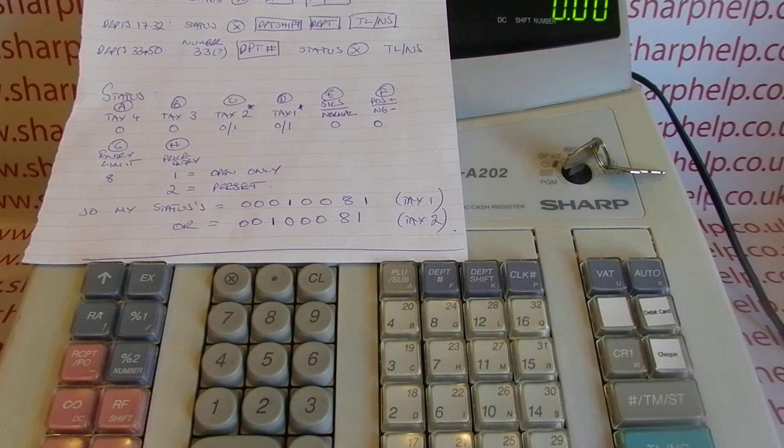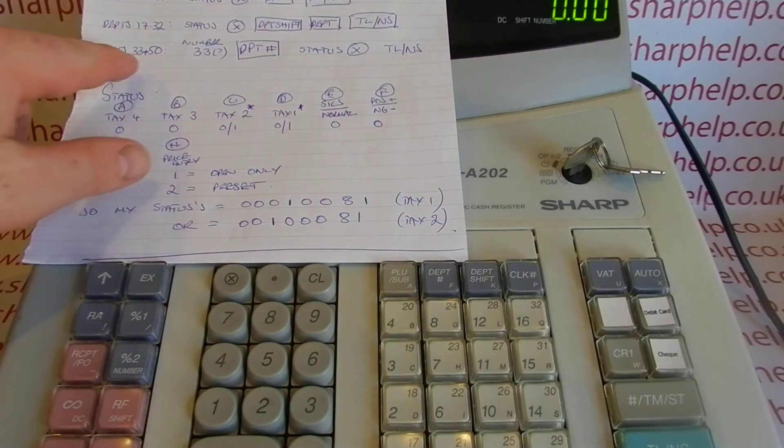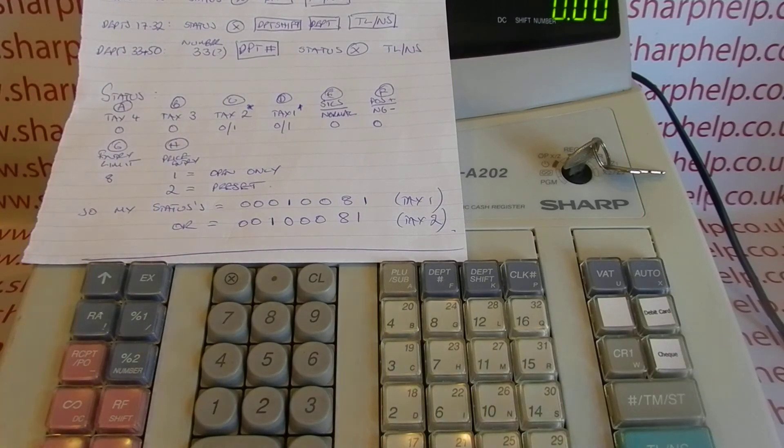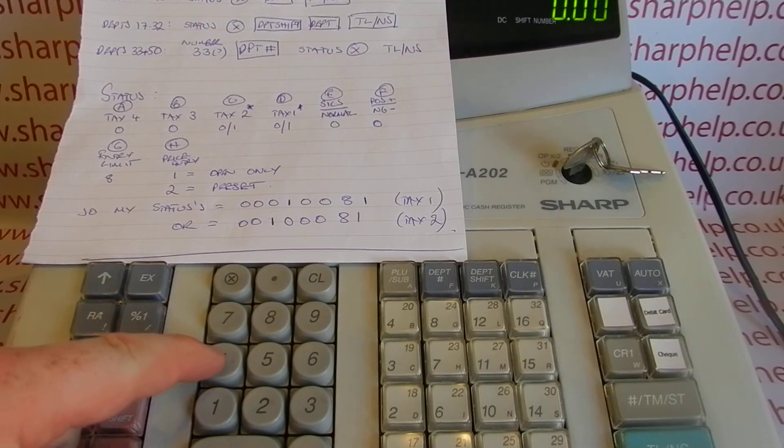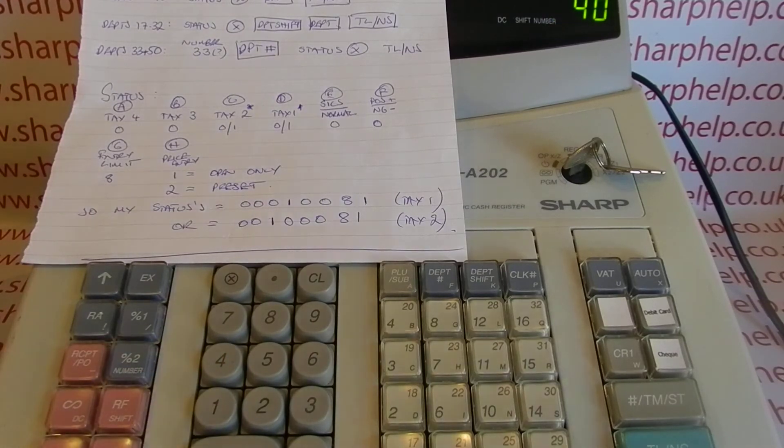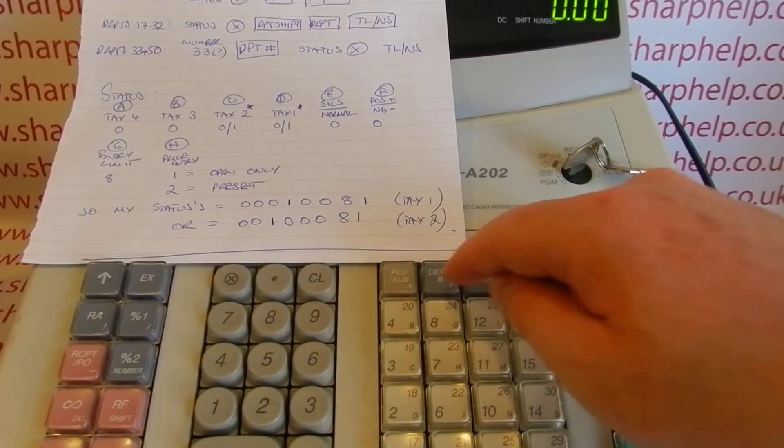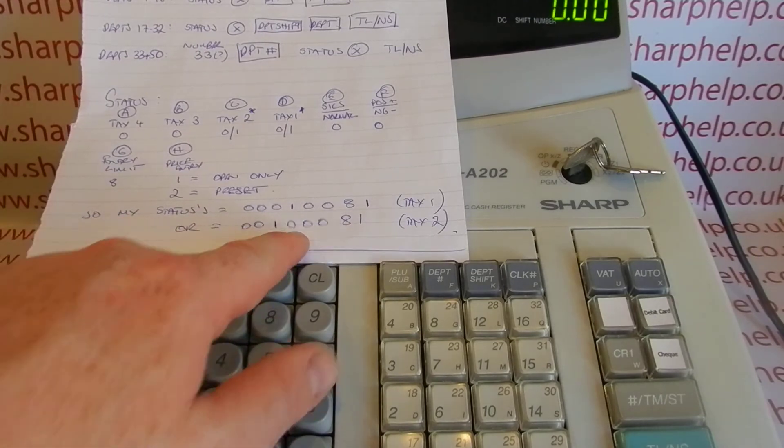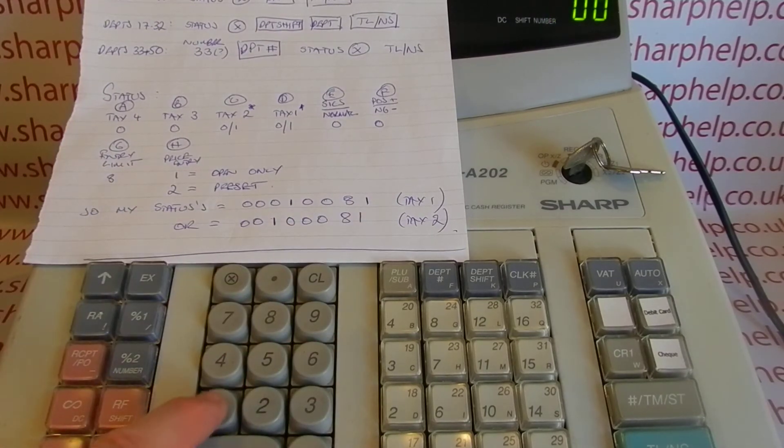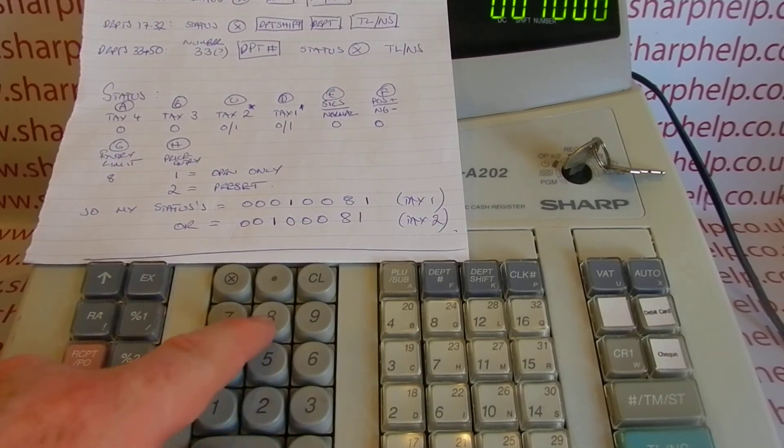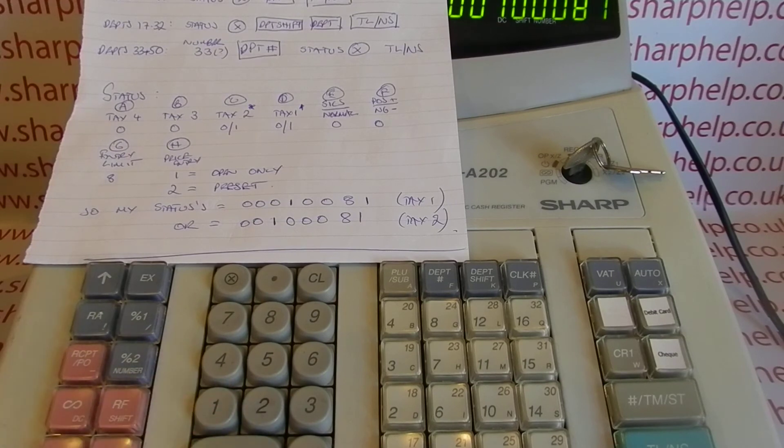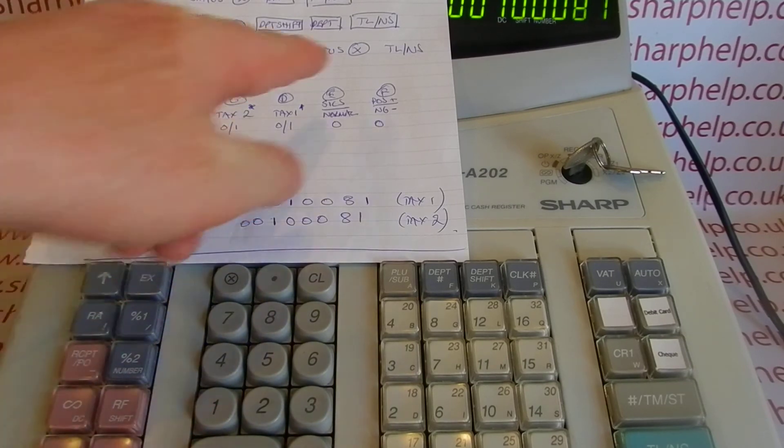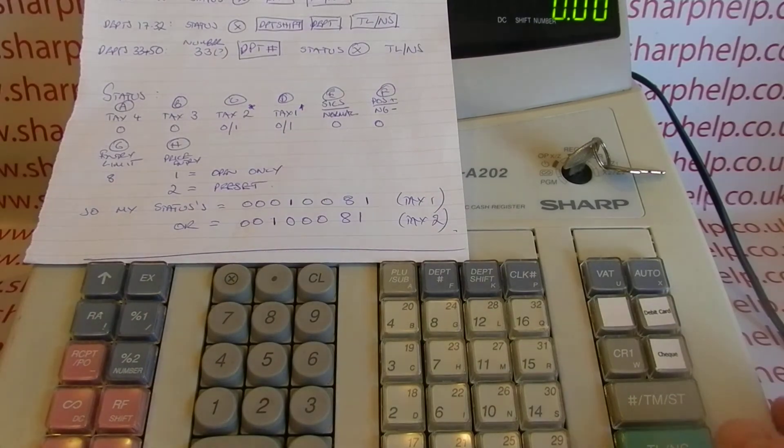I'll just show you the final, the other variant you can do if you're using departments 33 to 50. So this line here. They're obviously not covered by the normal buttons. You type in the number of the department first, so for example department 40. Type in 40, then you hit DEPT hash, then you type in the status. So let's do tax rate 2. So that's our one here: 0, 0, 1, 0, 0, 0, 8, 1, status, then the multiply button, and then TL/NS. And then we get our printout showing the department 40 set to tax rate 2.